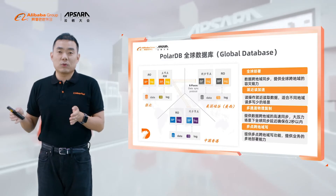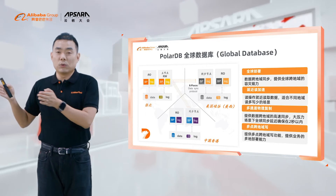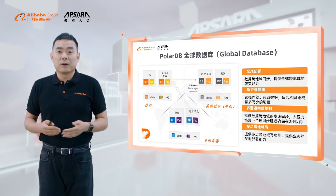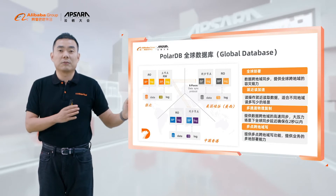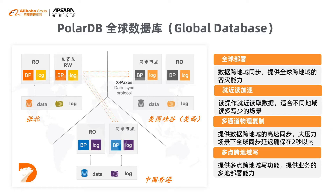In addition, we have optimized the online library and history library, introducing our unique LSTM-based technology for the history library, which greatly reduces the cost of historical data storage in our cloud native database. I'm also happy to share our global database. PolarDB provides cross-region access capability so our applications can access data nearby.